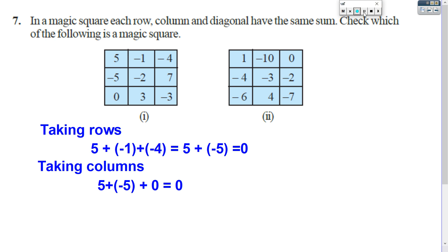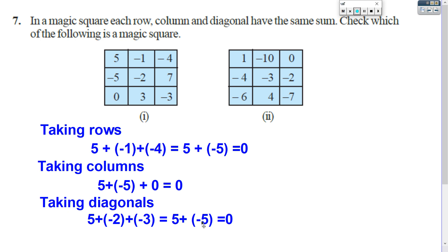Now we have to take the diagonal. Diagonal numbers are 5, negative 2, negative 3. Add numbers with the same sign: you get 5 plus negative 5, which equals 0. That means this diagonal sum is also 0. Check the other diagonal. The numbers in the next diagonal are negative 4, negative 2, 0. If you are getting all sums equal to 0, then you can say all sums are equal — row-wise, column-wise and diagonal-wise — and it is a magic square. Complete the first square and then check the second one.